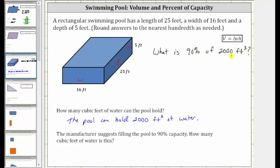To find the percent of a number, we convert the percent to a decimal and multiply. 90% as a decimal is 0.90, which is 0.9, and therefore to find 90% of 2,000 cubic feet, we need to determine 0.9 times 2,000.